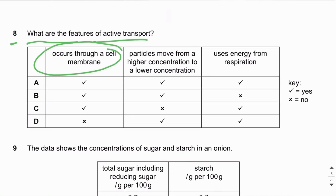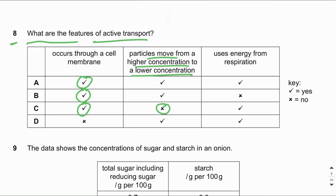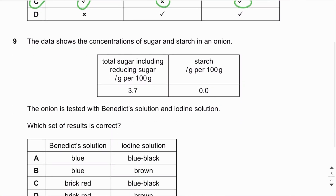MCQ number eight: What are the features of active transport? Active transport requires a partially permeable membrane or cell membrane — it cannot occur without one. Particles move from a lower concentration to a higher concentration, because particles are moving against the concentration gradient. Active transport is an active process — it uses energy from respiration. The answer is C.